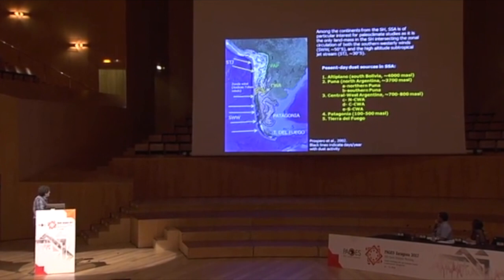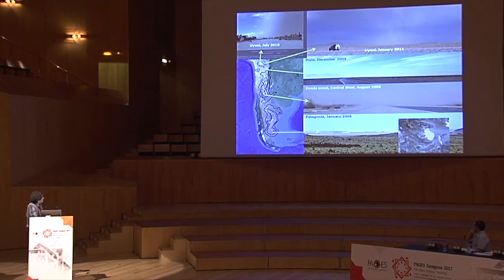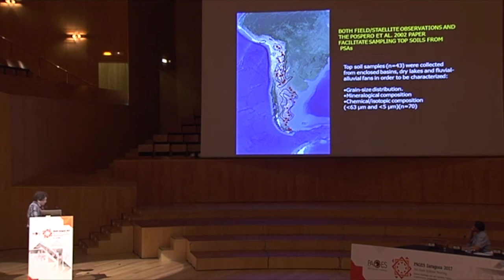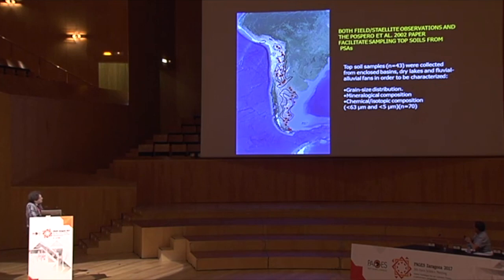Based on field evidence showing dust activity in many different places of the arid diagonal of Southern South America, and also satellite images showing dust storms, along with the outstanding paper from Prospero, all this evidence helped us facilitate the sampling of topsoil samples from the potential source areas. We collected topsoil samples from enclosed basins, salt lakes, and fluvial alluvial fans, characterized in terms of grain size distribution, mineralogical composition, and chemical-isotopic composition in different grain sizes.